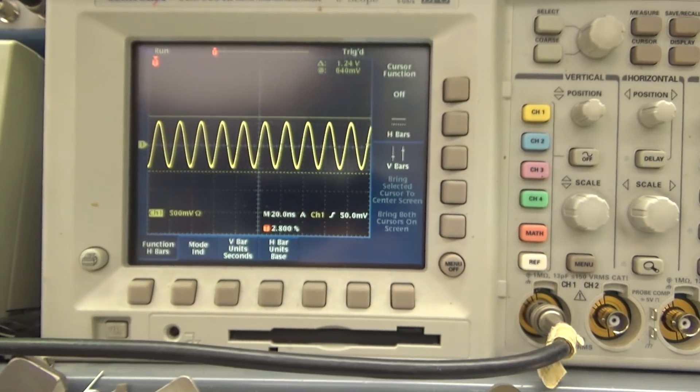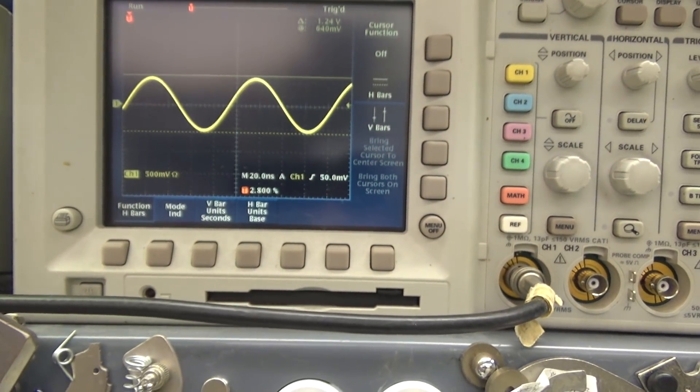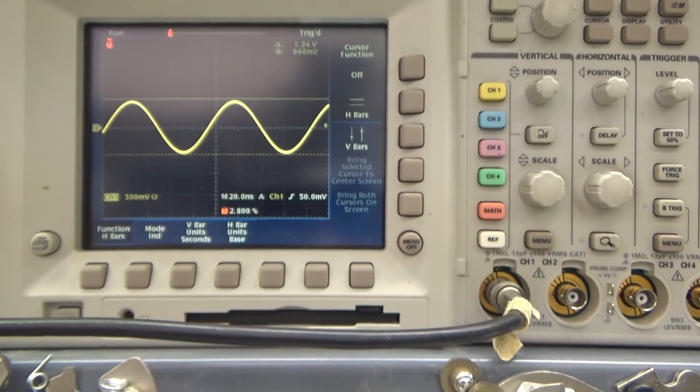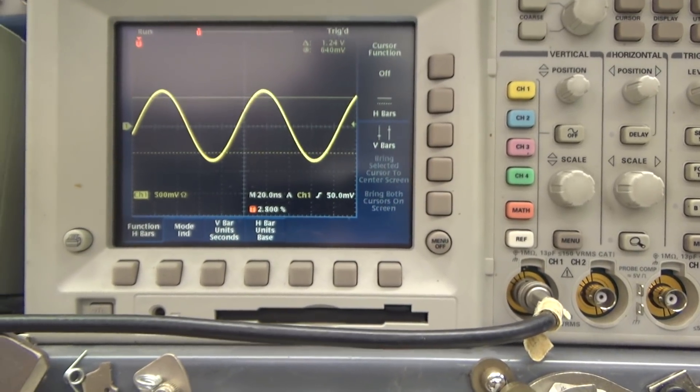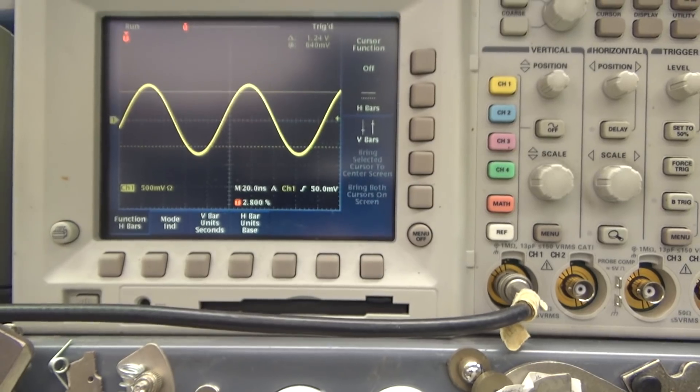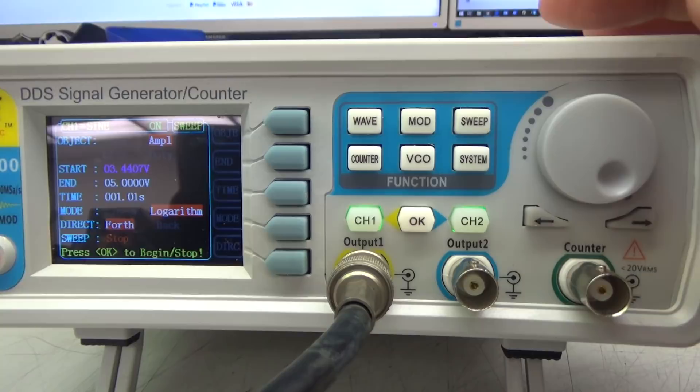You don't need to just do frequency. You can also do amplitude sweep which is really handy. And you can do DC offset and duty cycle. And that would again apply to something like a square wave not a sine wave.